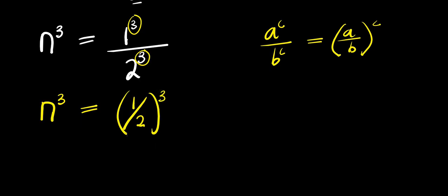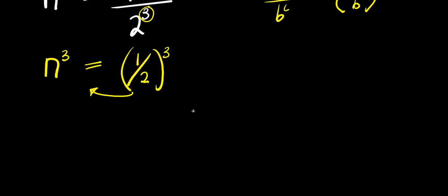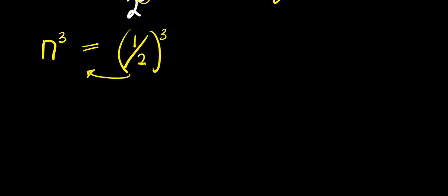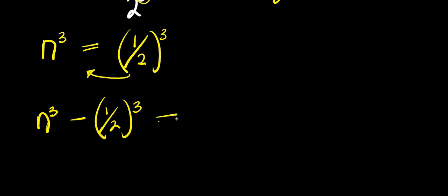n³ — I can decide to move this over here, and this becomes negative (1/2)³. So we have n³ minus (1/2)³ equals 0. So right now, I have power 3 here and I also have power 3 here.